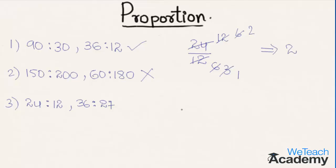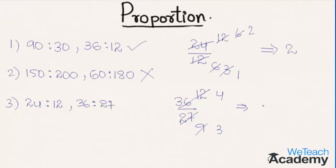Coming to the next ratio, 36 is to 27, which can be written as 36 divided by 27. Simplifying: 3 times 9 is 27 and 3 times 12 is 36. Further simplifying, 3 times 3 is 9 and 3 times 4 is 12. So we get the result 4 by 3, and we can say that these ratios are not in proportion to each other.